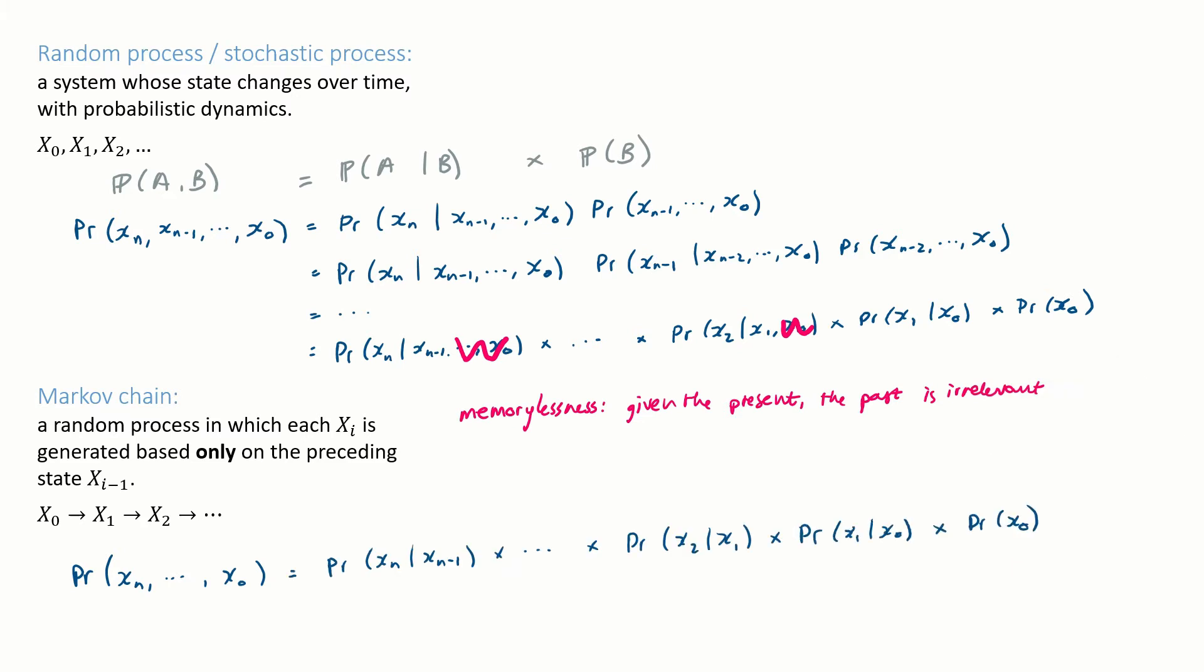All that matters is the most recent state, which means that the likelihood of the data set is the product of one-step likelihoods, the likelihood of an item in the data set given just the preceding item. This is the sort of likelihood function that is easy to work with.